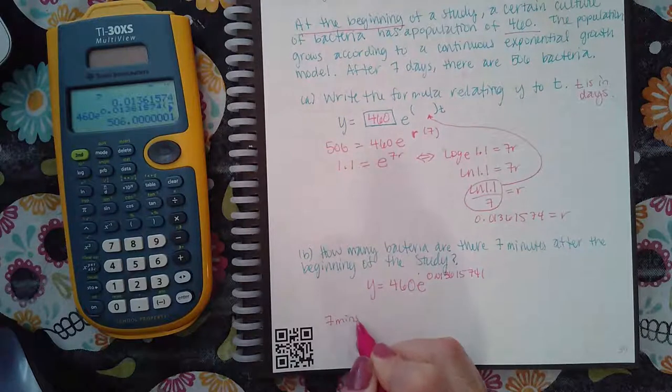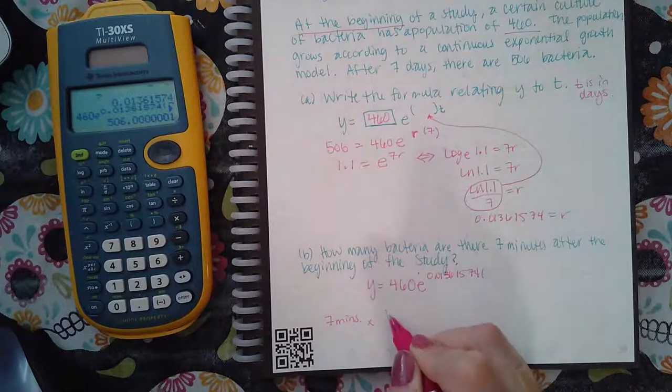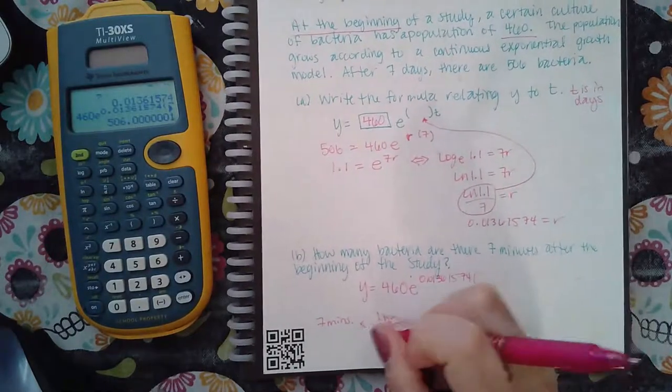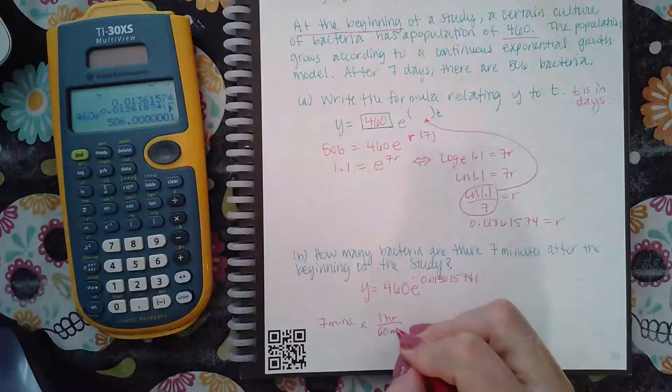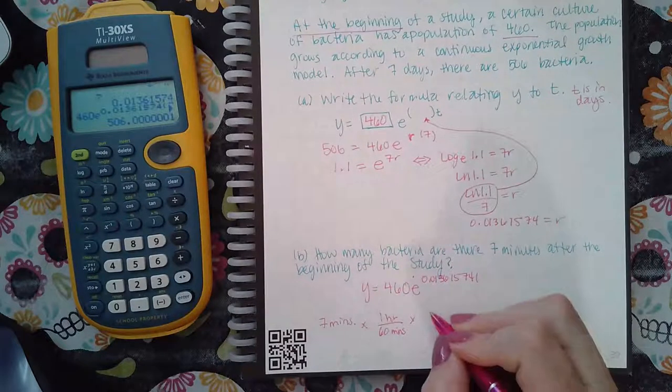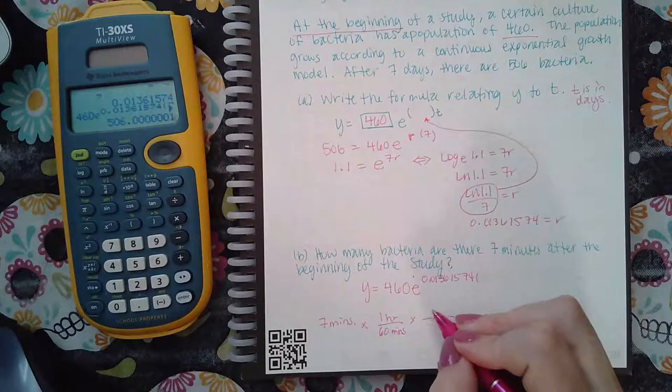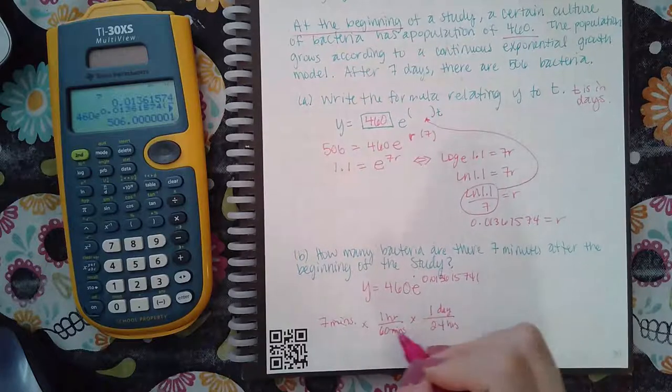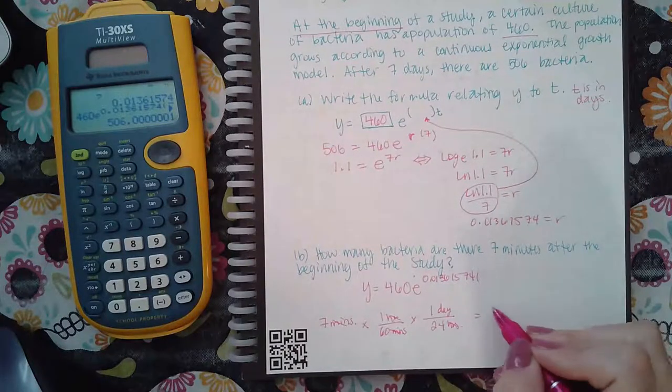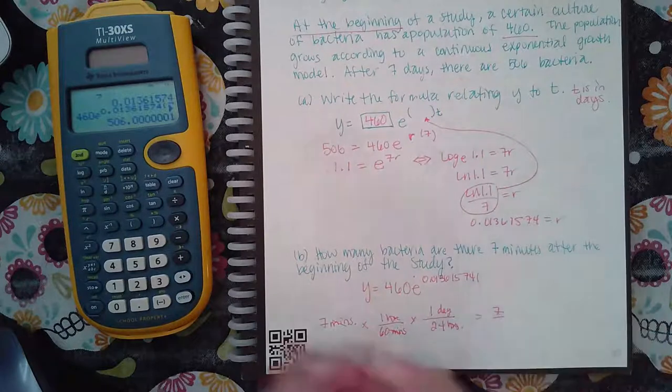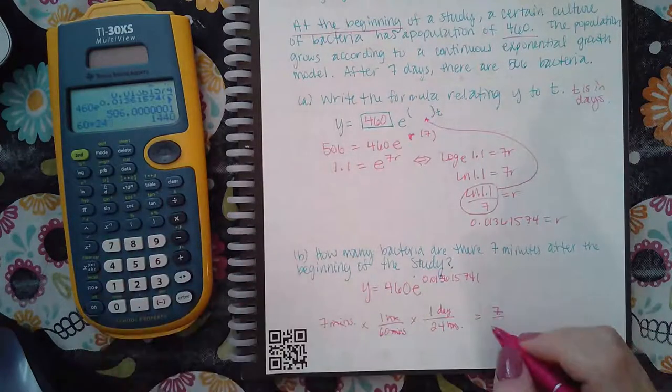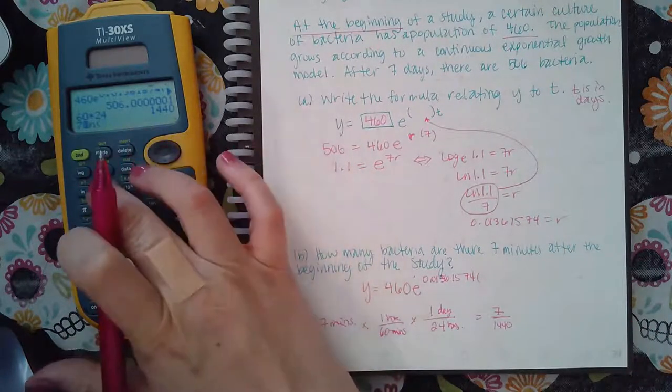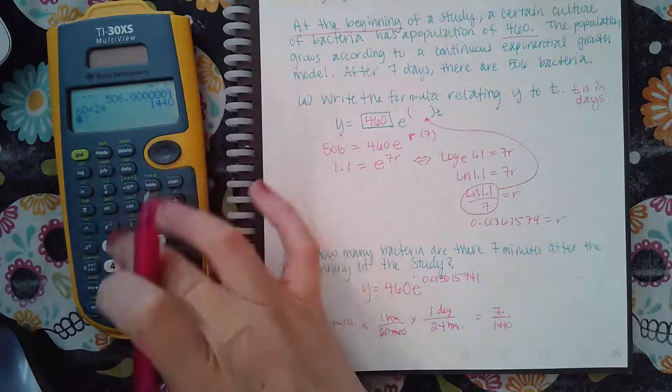Because if I'm talking about seven minutes, that is not the correct value in there. So if you have seven minutes, remember that every hour has 60 minutes in it. And then every day has 24 hours in it. The minutes cancel, the hours will cancel and you'll get seven times one times one is seven. And then 60 times 24 is 1440.